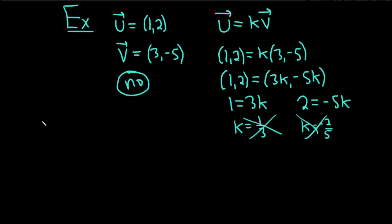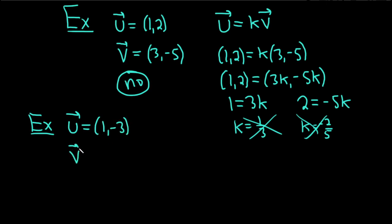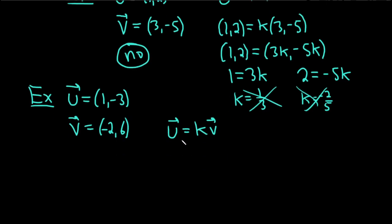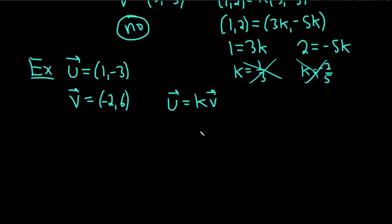Let's do another one. We're just focusing on two vectors in this video. This one is very similar. Let's look at the vector u = (1, negative 3) and v = (negative 2, 6). Same thing — let's force them to be multiples of each other and see what happens. I'll show you a structured way that will always work.